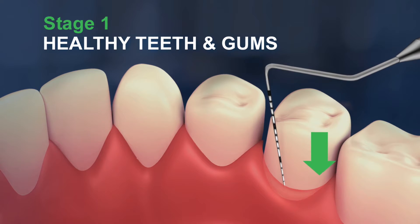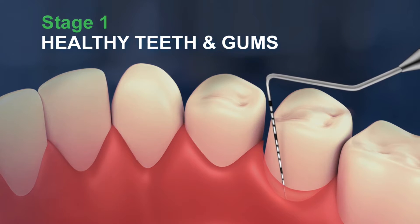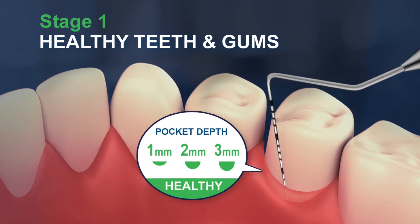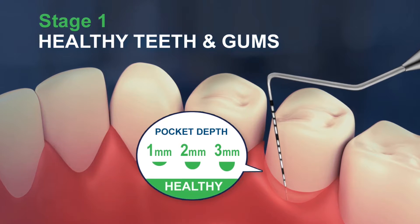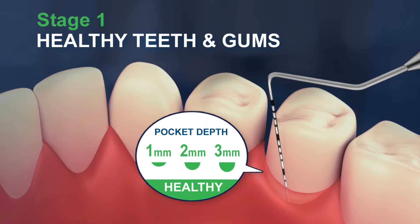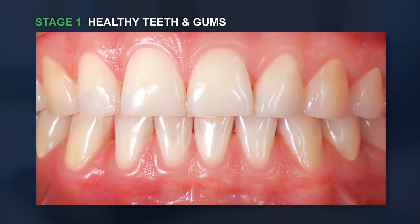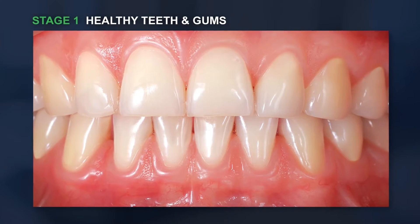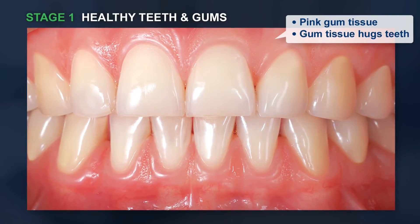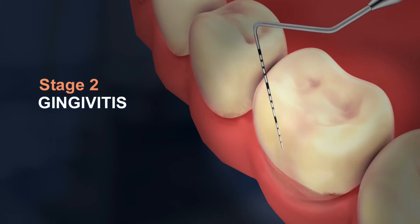Healthy teeth and gums are indicated by a pocket depth of 1 to 3 millimeters with no bleeding or sensitivity. Healthy gums will appear pink in color and gum tissue closely hugs the teeth.